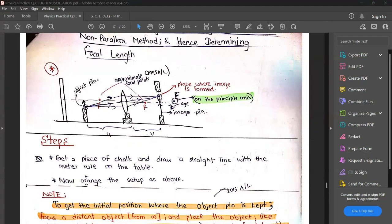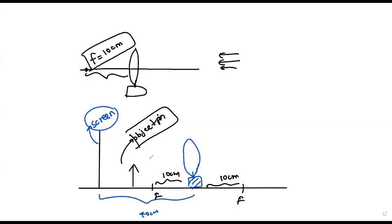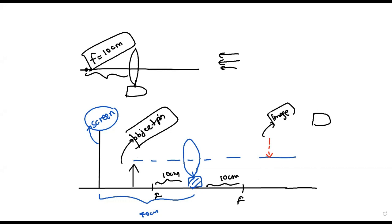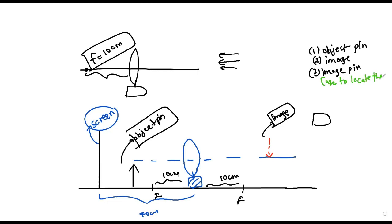Now you might have a problem - how can we locate the image? The object is there, there will be rays coming through the lens. Suppose the image has formed somewhere on the other side - it should be inverted. There are three things in this practical: number one, you have the object pin; number two, you have the image (a real image formed by the lens); number three, you have the image pin, which is used to locate the position of the image.